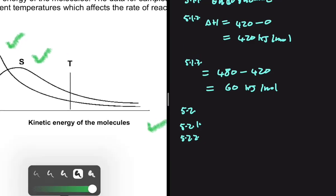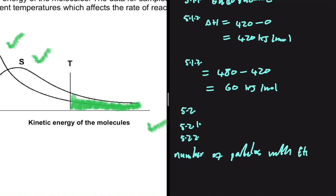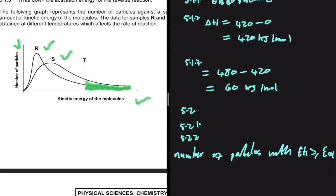We have a line T on the graph. The area to the right of line T represents the number of particles with a kinetic energy that is equal to or greater than the activation energy — that is, the number of particles with sufficient energy. That is the answer to 5.2.2.